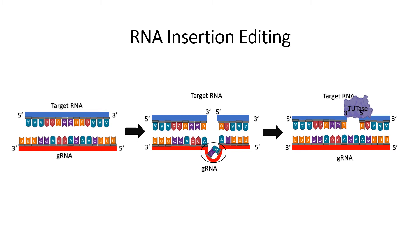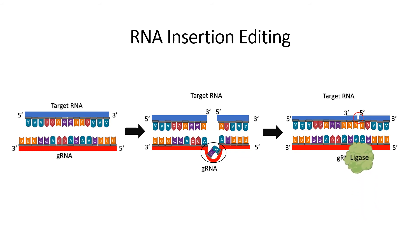TUTase, or terminal uridyl transferase, is an enzyme that can extend sections of RNA by adding uridines to the three-prime end of an RNA cleavage product as long as there is a template strand that provides complementary A's or G's. In RNA, not only AU but also GU base pairs are possible. In other words, the TUTase will insert a U into a break in the transcript if there is a G or an A across from the break in a bound guide RNA. Once the TUTase extends the transcript, it disassociates, leaving an edited three-prime end of the five-prime cleavage product. A ligase will then come in and seal the nick, so at the end we will have a fully continuous edited target RNA product.